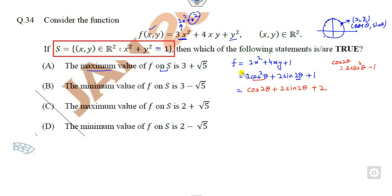Now you have to find the maximum value. How can you find it? First, take the derivative as zero. It will be -2sin(2θ) + 4cos(2θ) = 0.